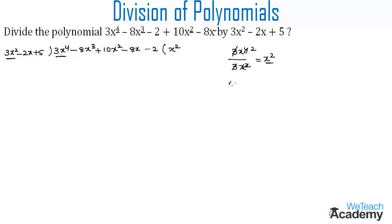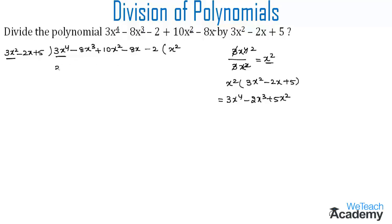Now let us multiply x² with the divisor 3x² minus 2x plus 5. Multiplying x² by 3x² gives 3x⁴; x² times minus 2x gives minus 2x³; and x² times 5 gives plus 5x². We write 3x⁴ minus 2x³ plus 5x² below the dividend.